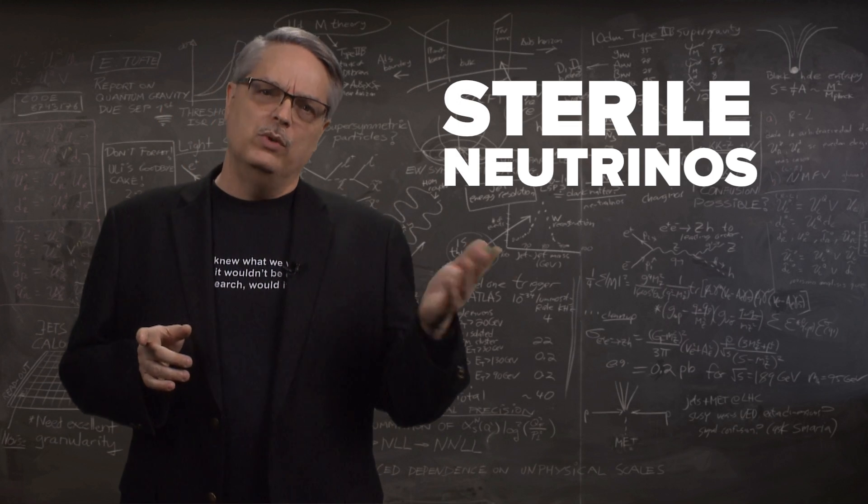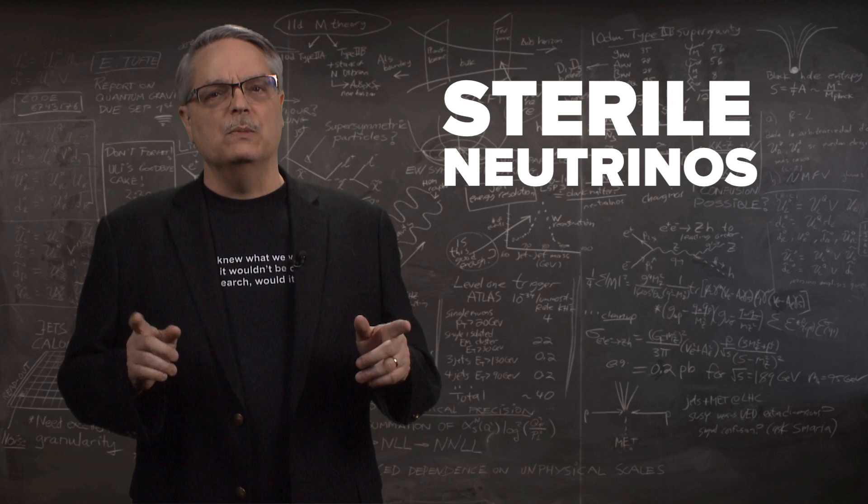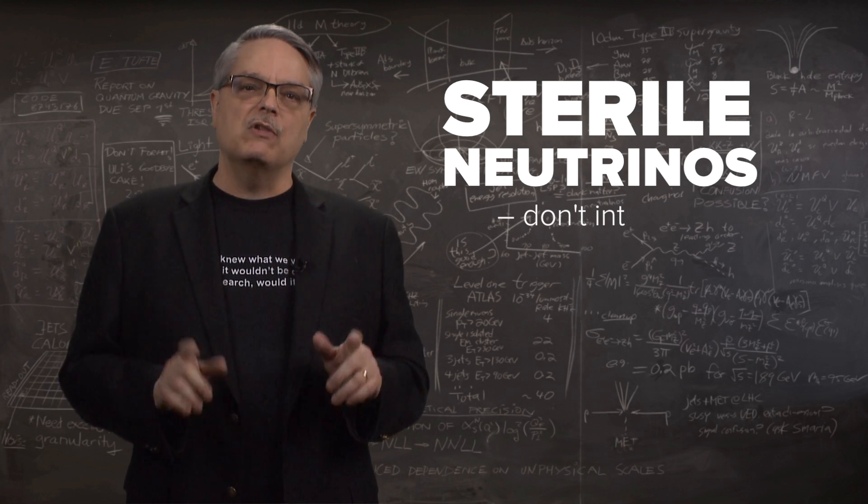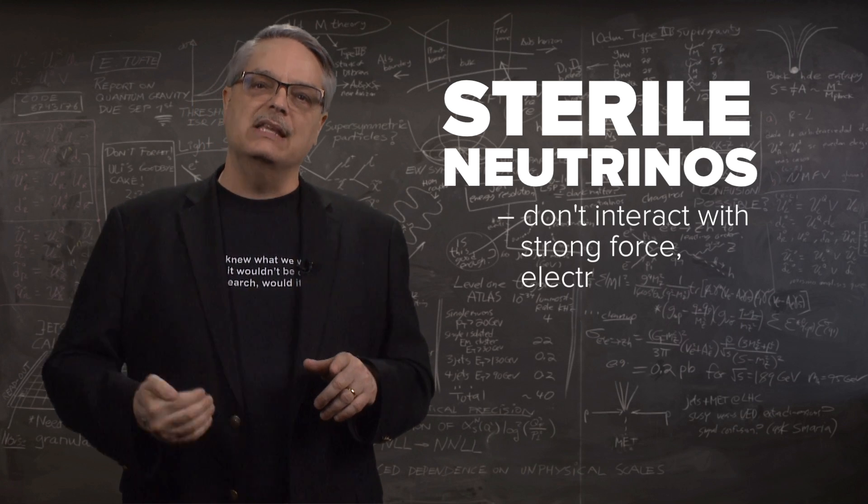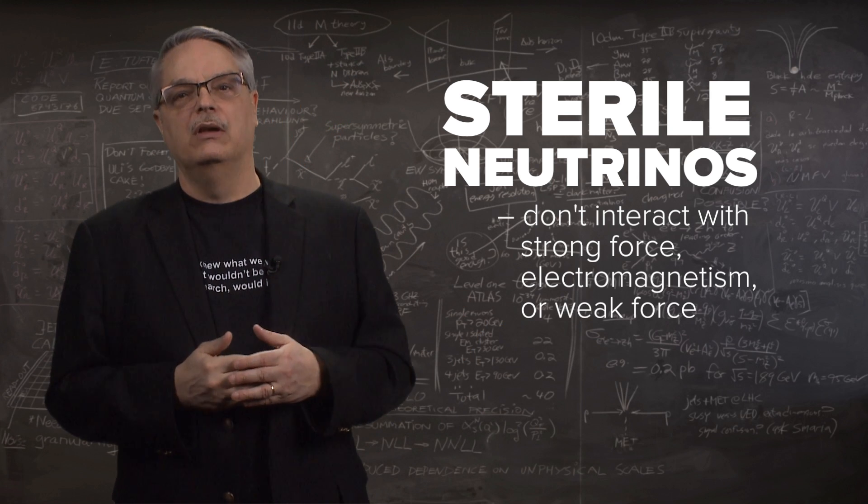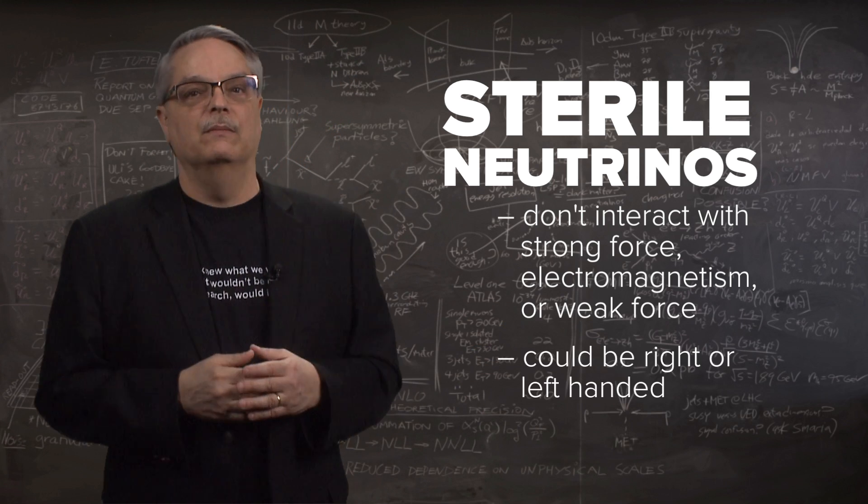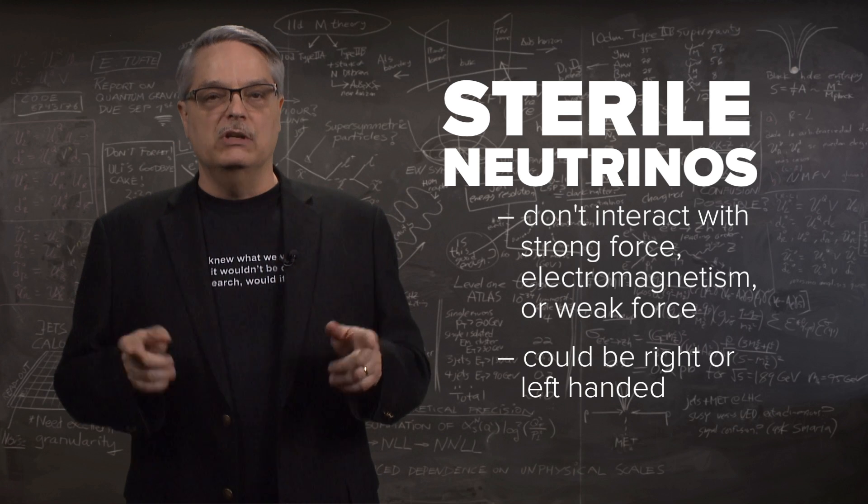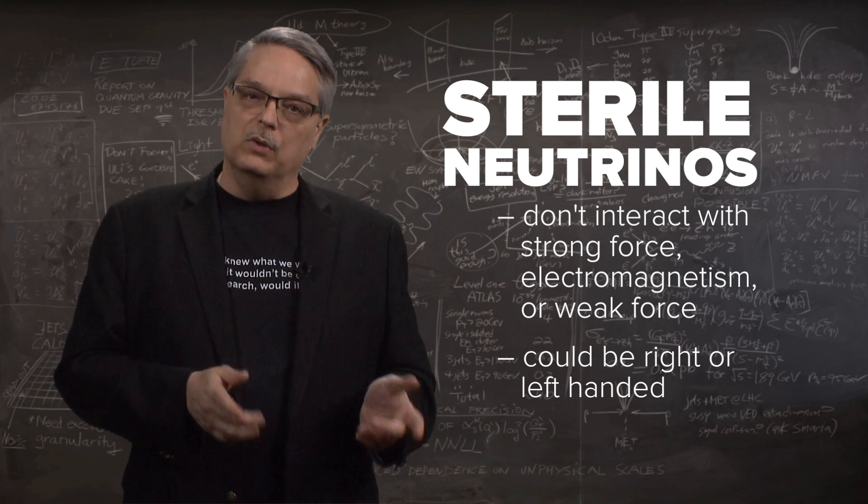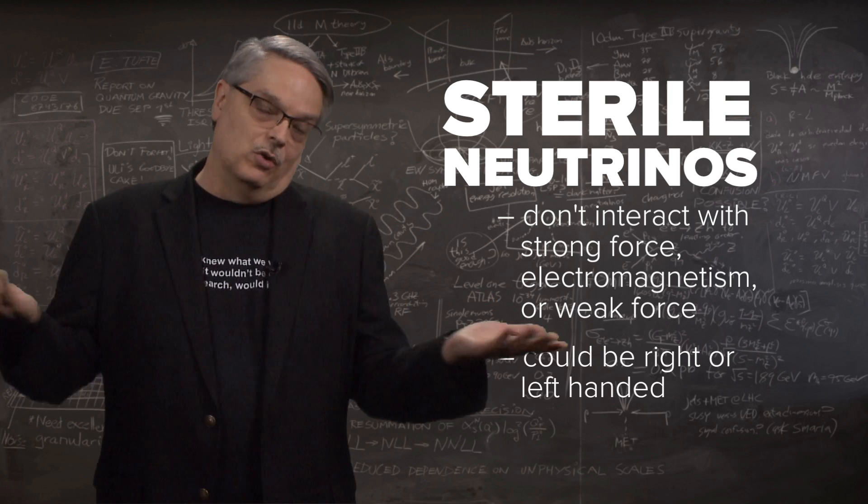But you have to be careful with the nomenclature. In principle, any particle that doesn't interact with the strong, electromagnetic, or weak forces can be considered to be sterile. They could be right or left-handed. But since right-handed neutrinos fit the bill, they are examples of sterile neutrinos. Well, of course, if they exist.